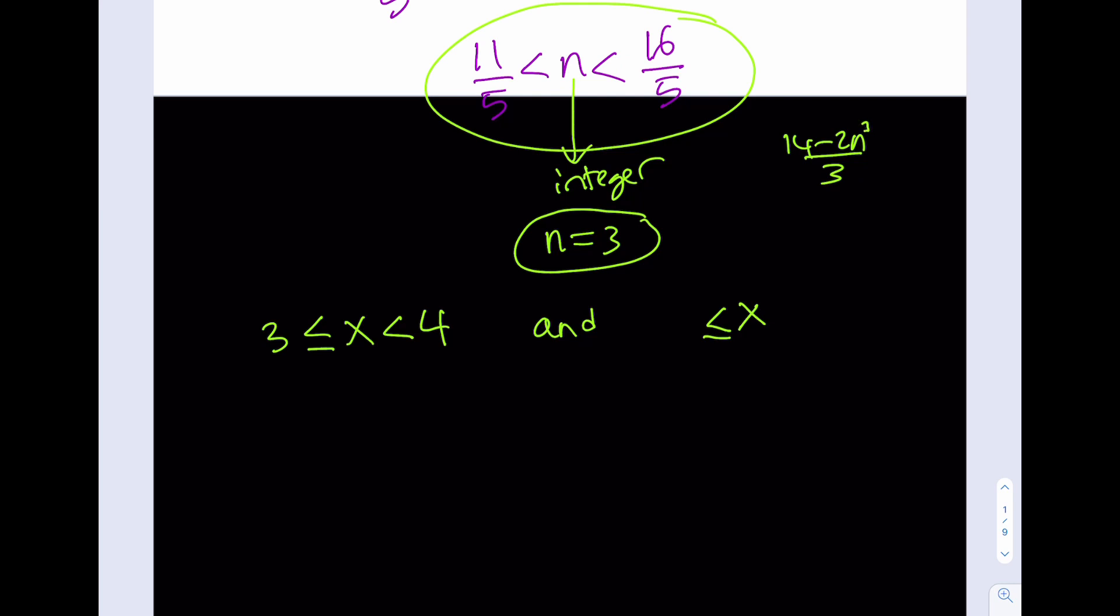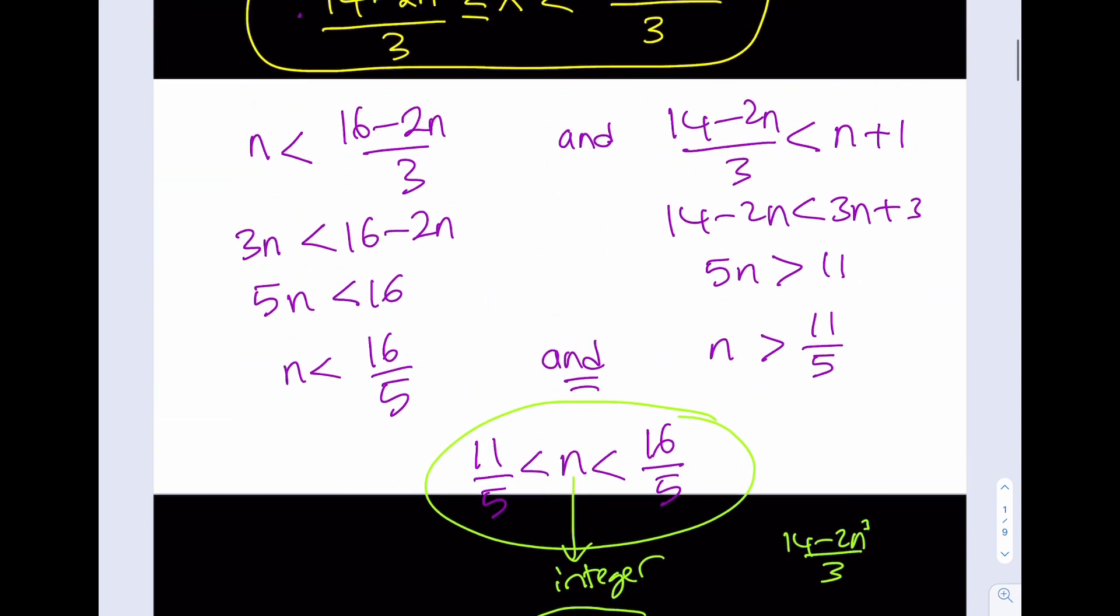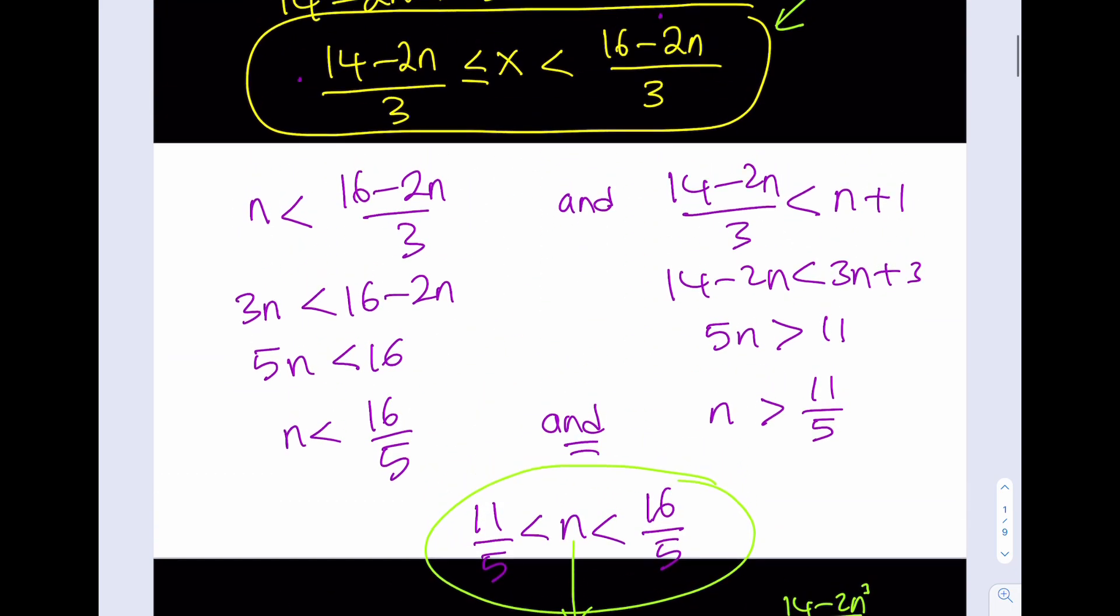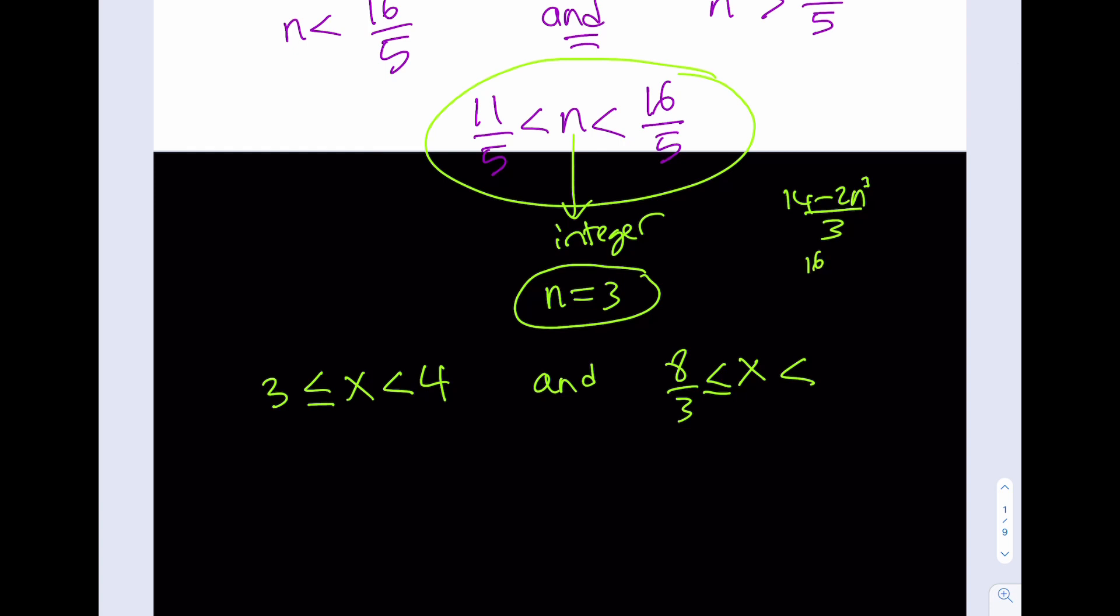And then on the other side, I would have 16 minus 2n over 3. 16 minus 2n over 3. And for n equals 3, that will be 10 thirds.